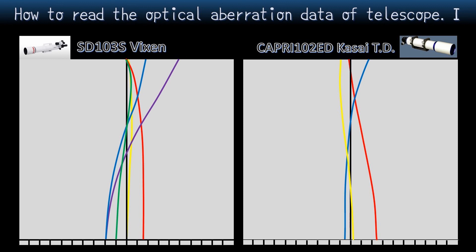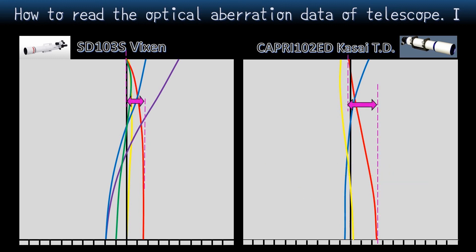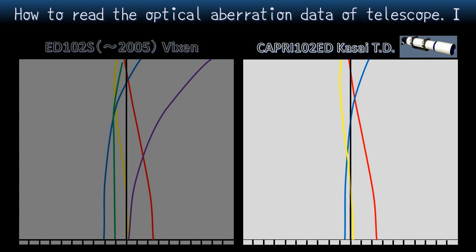Well, this is a comparison between SD-103S and Capri-102ED. Capri has a very bent yellow line. This indicates that spherical aberration of Capri is very large. The yellow line is very visible, so it must be straight. Similarly, red light of Capri also has large spherical aberration. Also, where did the green and purple line go?